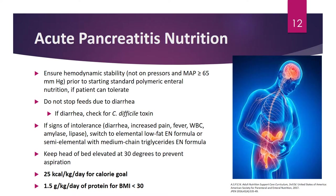For acute pancreatitis nutrition, the first priority is hemodynamic stability — ensure the patient is not on pressors and mean arterial pressure is at least 65 mmHg before starting enteral nutrition. If blood is shunting away from the gut, introducing nutrition increases risk of nausea and vomiting. Once hemodynamically stable, a standard polymeric enteral nutrition formula can be started if the patient tolerates it.